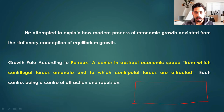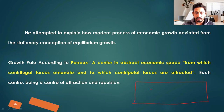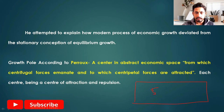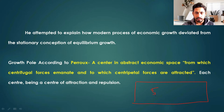Suppose this is the economic plane over which there is a centre. Due to the forces of unification, a bigger centre was formed and that centre became a centre of attraction and centre of diversification. Each centre is both a centre of attraction and centre of repulsion, so certain related activities were attracted towards that centre.